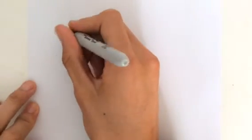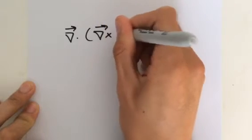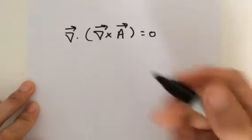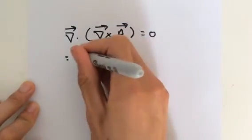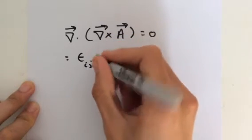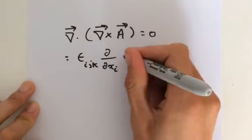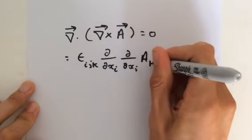Let's go on to our second proof: the divergence of the curl. We can write that as the divergence of the curl of a vector field, and that gives you a scalar. We're not going to pull out an i component this time, because it's obviously a scalar. All we need is epsilon i, j, k, then the partial derivative with respect to x_i, then x_j, and our vector component a_k.